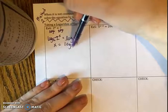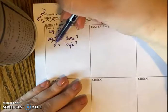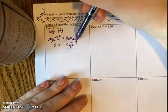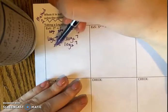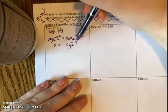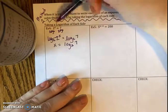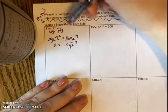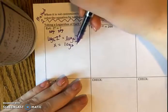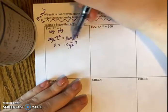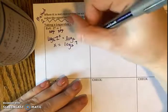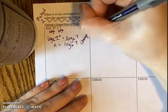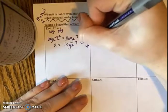Does 2 to some power give me seven? Two to some power will not nicely give me seven. 2^1 is two, 2^2 is four, 2^3 is eight, so I can't get there. When we cannot use the circle trick, we need to use the change of base formula.